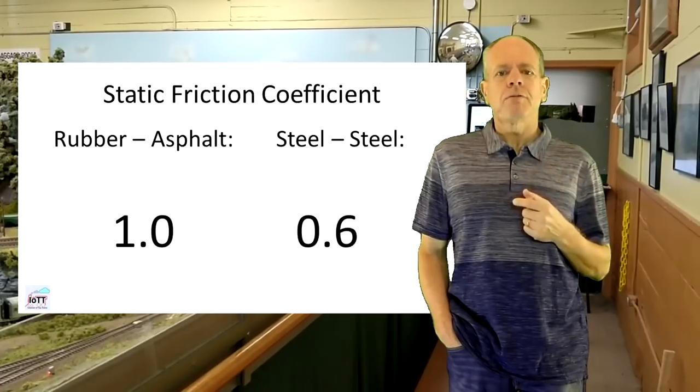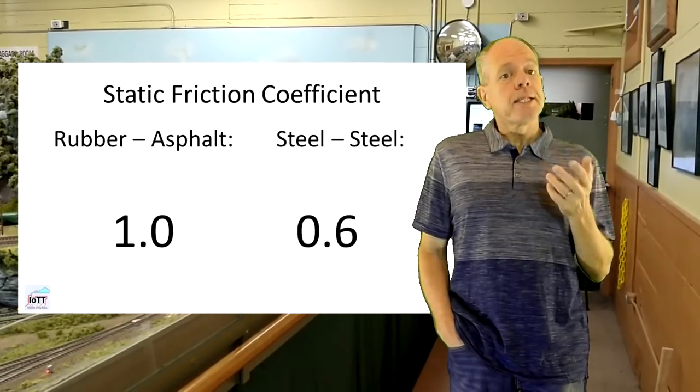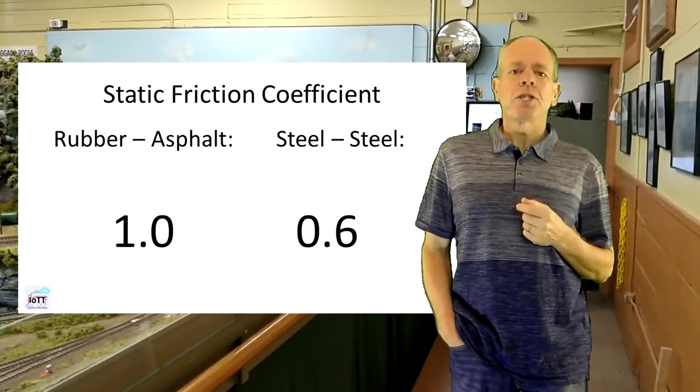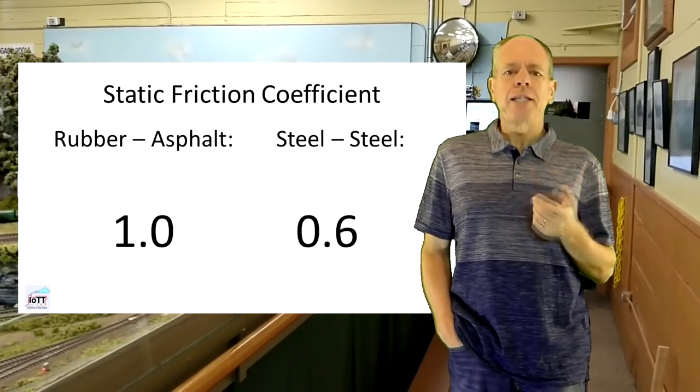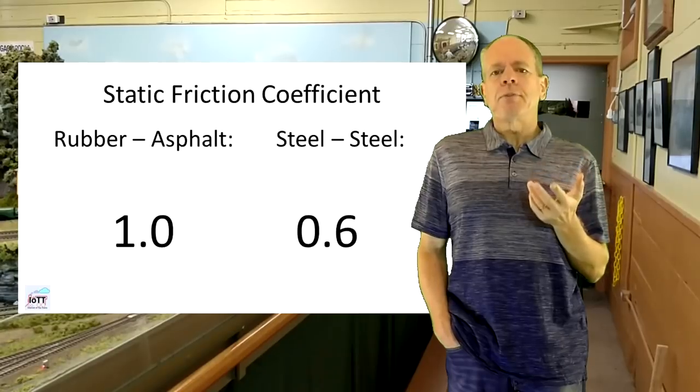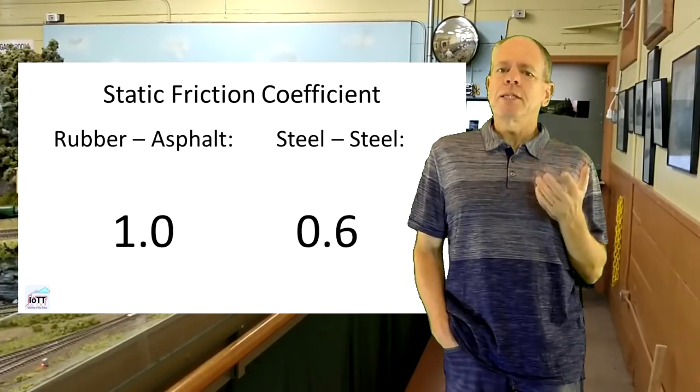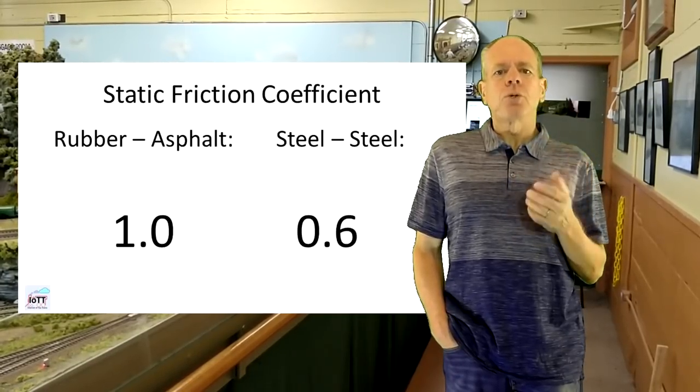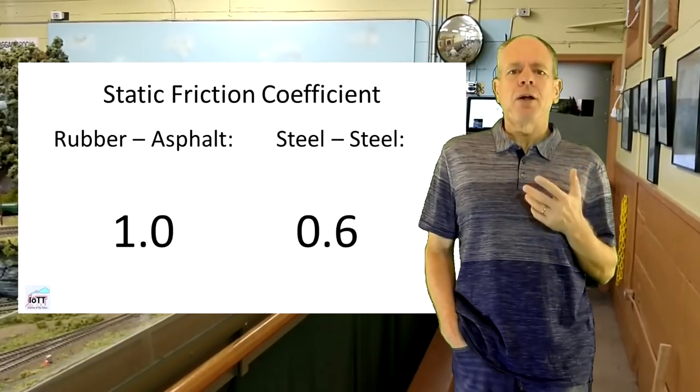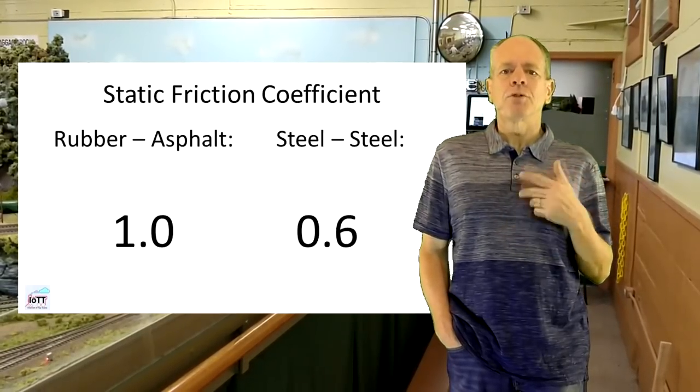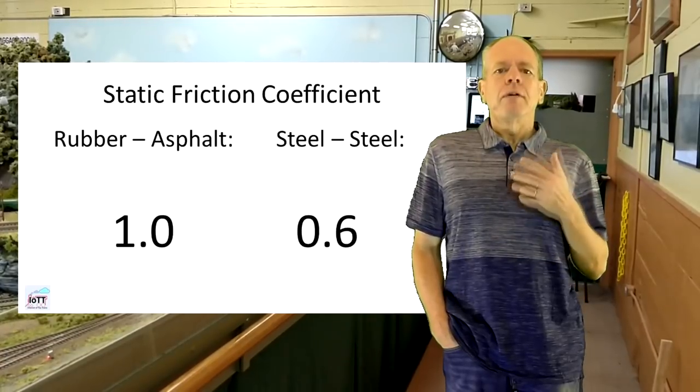0.6 versus 1.0. 0.6 is the static friction coefficient of dry steel on steel. Compare this to rubber on dry asphalt where the coefficient is about 1.0. What this means is that compared to road traffic, braking forces at the wheel of a train can only be about 60% of those at the car wheel with the same load.